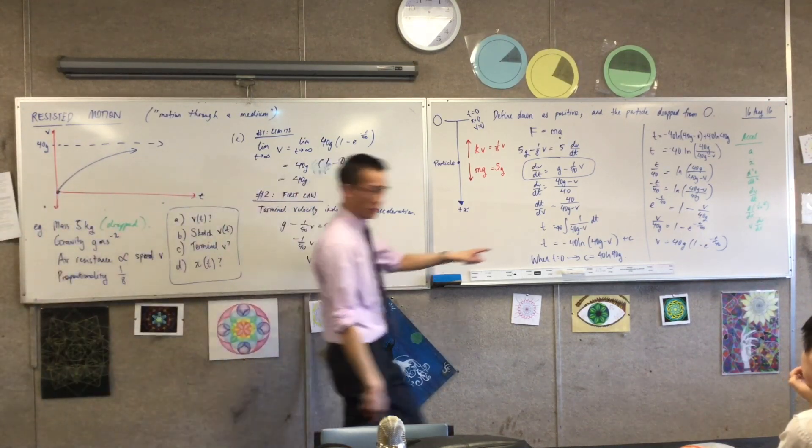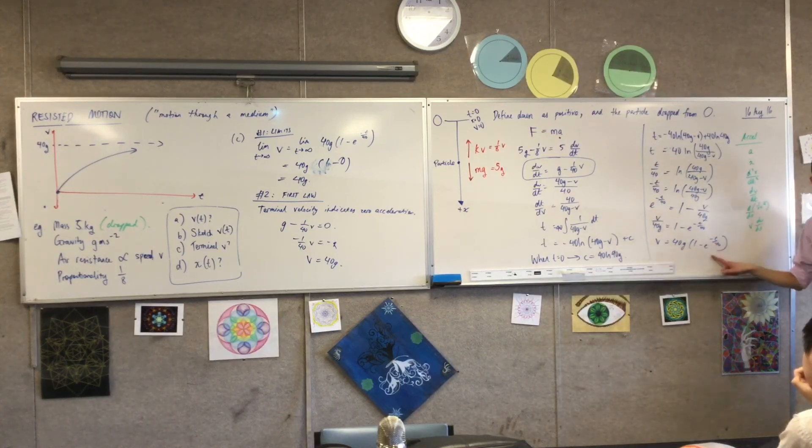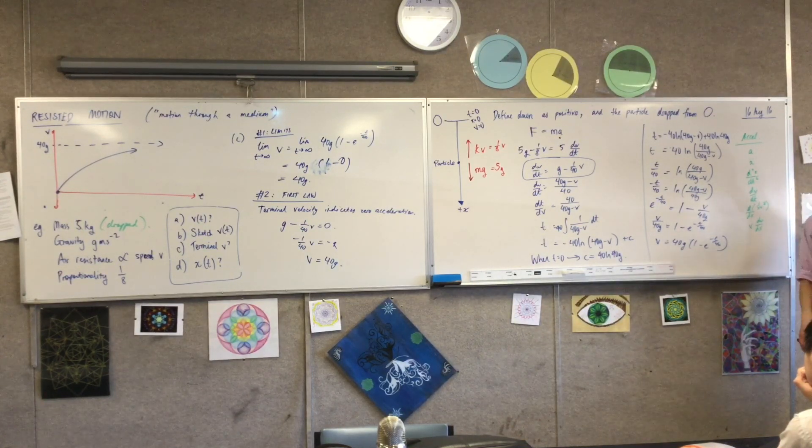Okay, so you've got your velocity function and all you need to do is say, well, that's dx/dt and this is already in terms of time. So off you go, integrate again, and you're done.